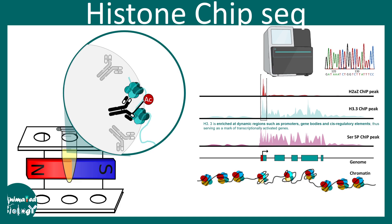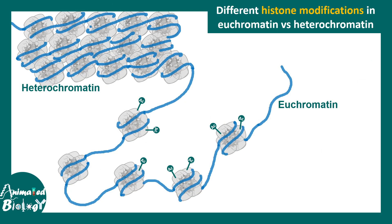In this video we will understand the concept behind histone ChIP-seq. ChIP-seq stands for chromatin immunoprecipitation followed by sequencing. This is a particular technique or a variant of chromatin ChIP-seq to understand the histone modifications and how that is associated with specific genes. It's already a mouthful, so let me break it down.